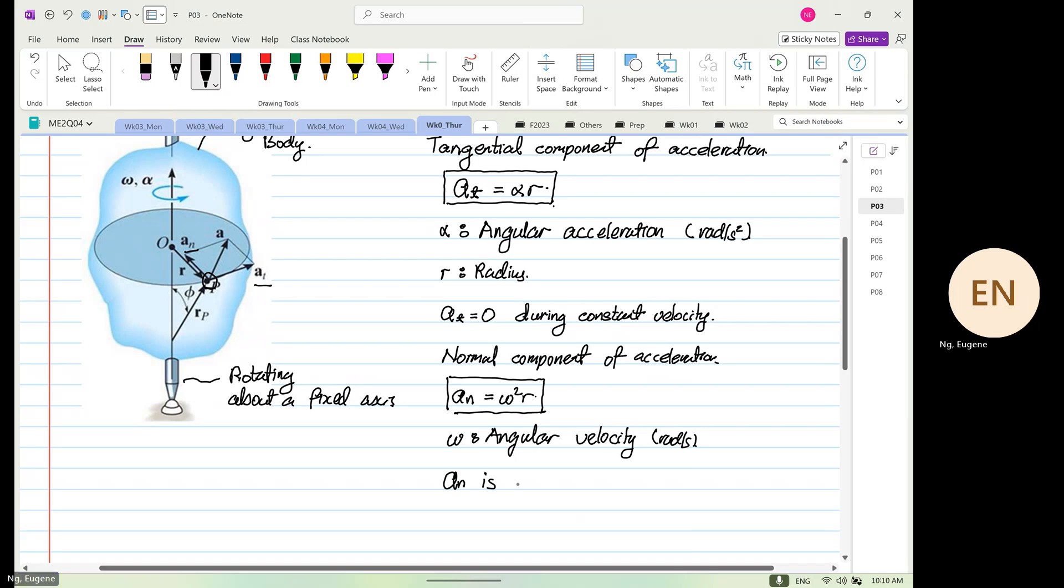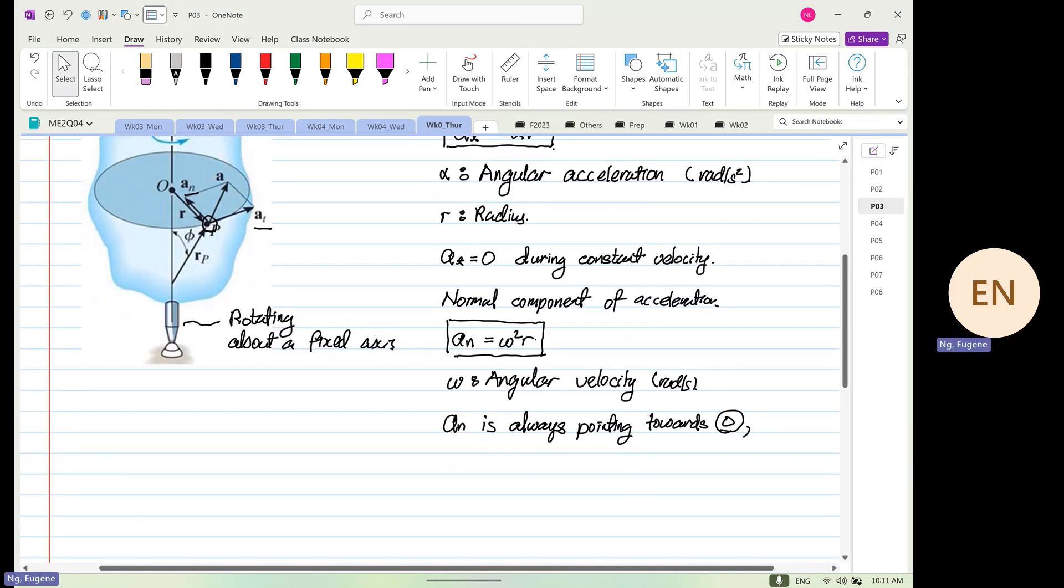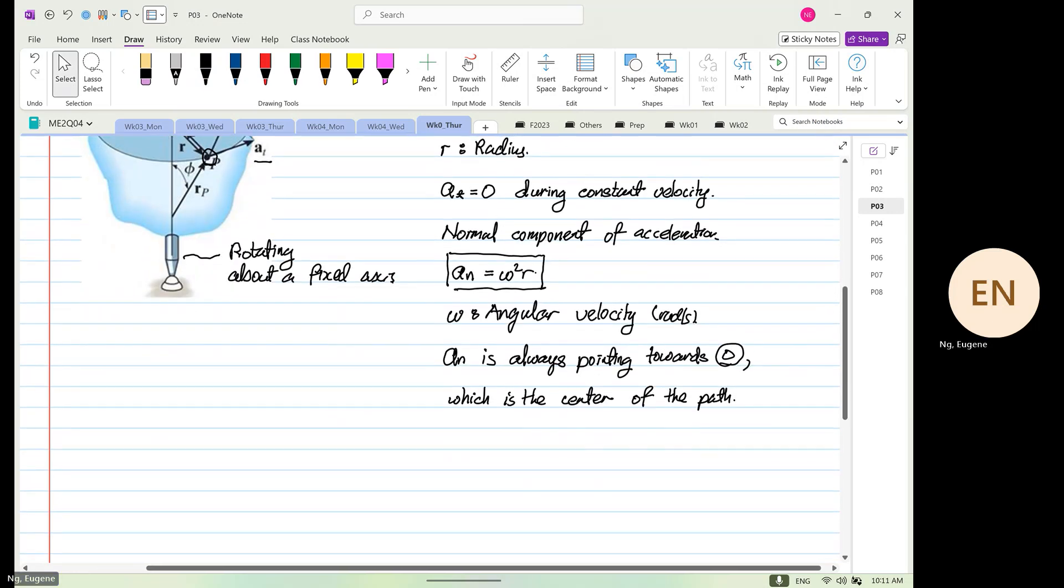So the a_n is always pointing, it's always pointing towards O, towards point O which is the center of the path.